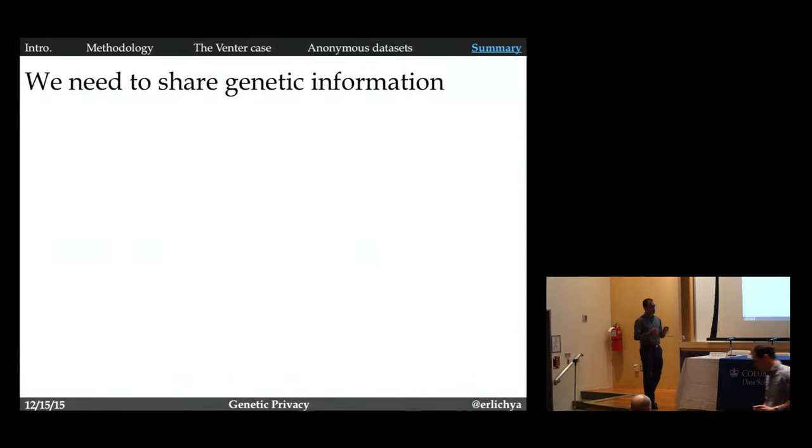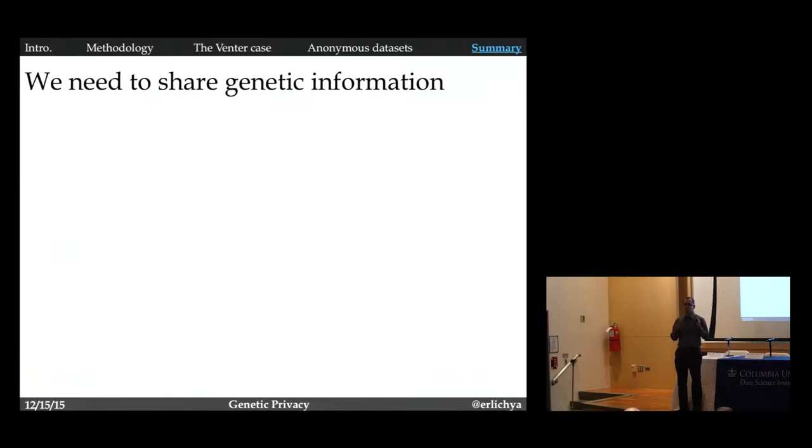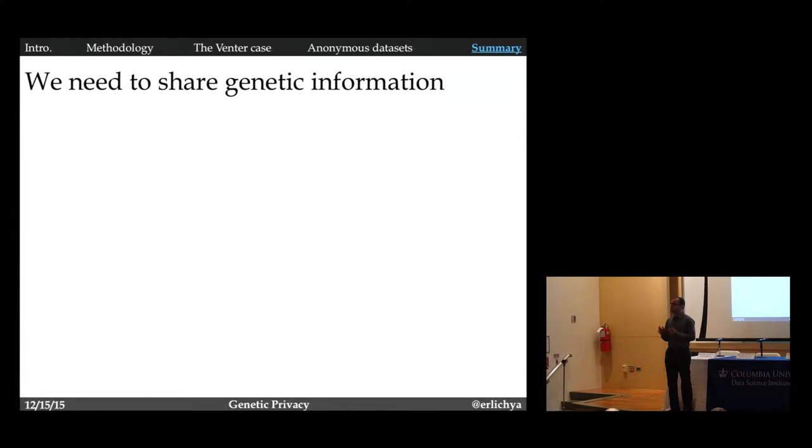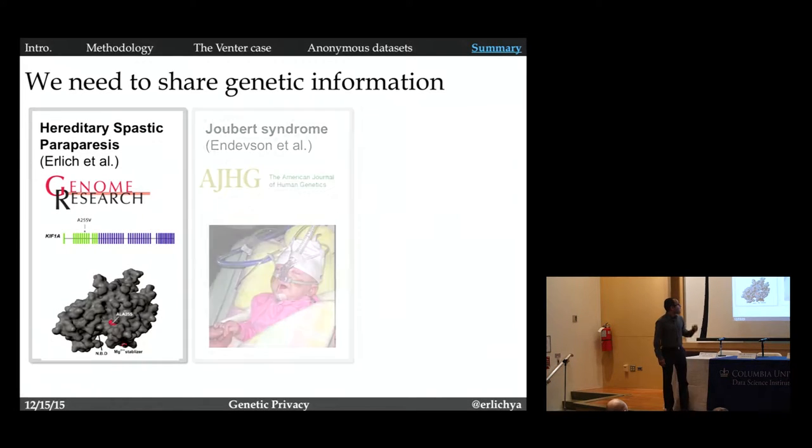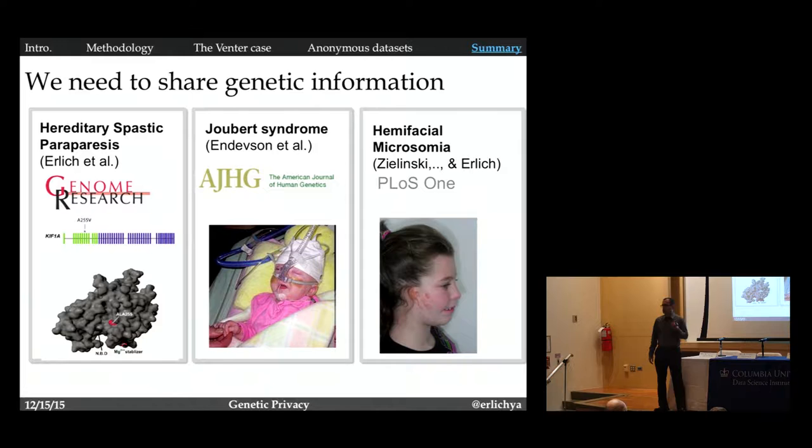The way I want to start my talk is that we need to share genomic information. If you want to help families with rare genetic disorders, to understand the genetic basis of cancer, we need to share this data set. In my own group, because people shared genomic information, we were able to solve the genetic basis of three devastating pediatric disorders.